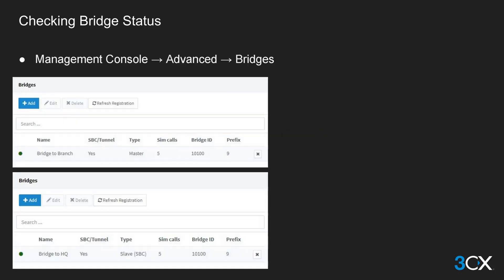You can easily check the connectivity status of the bridge from both PBXs by going to the bridge page in the advanced menu. A green dot next to the name of the remote PBX indicates an established connection, while red means the bridge is disconnected.